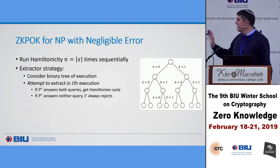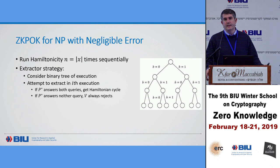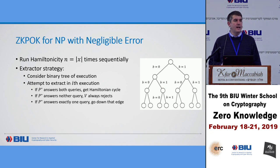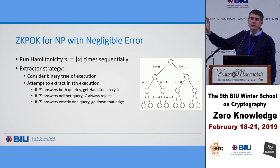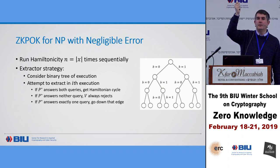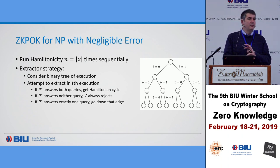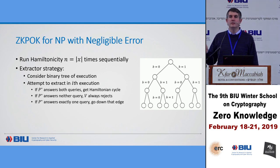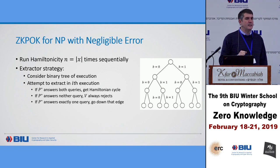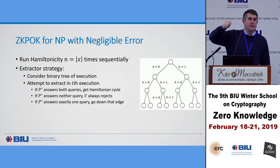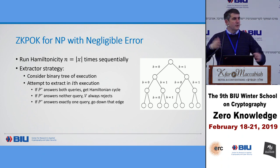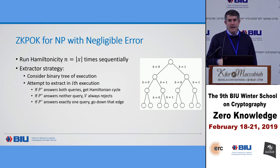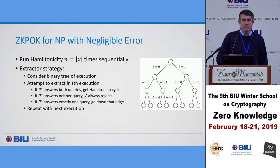Extraction fails only if the prover answers exactly one query in each execution throughout the entire tree. In that case, there's only a single path where the verifier can be convinced. What's the probability of the verifier being convinced by such a prover over n executions? 2-to-the-minus-n — because at each execution there's only probability one-half that the prover convinces the verifier. So this extractor has knowledge error 2-to-the-minus-n.